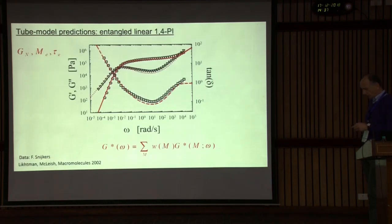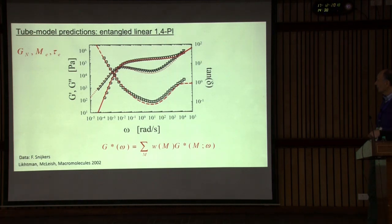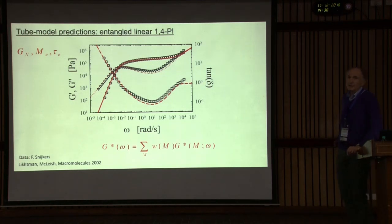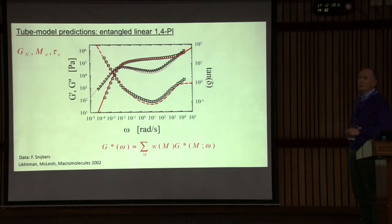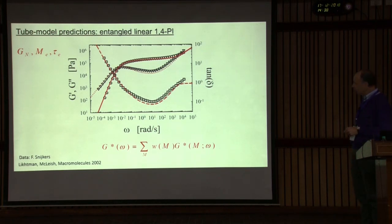One can use the tube model, which tells you that the modulus is basically a combination of contributions from different molecular weights at different frequencies. You need to know something about the dispersity of the chains and account for a number of details, mainly fluctuations of the ends and constrained release. In principle, without adjustable parameters — since the three parameters of interest, which are the plateau modulus, the entanglement weight, and the Rouse time of entanglement, are known from experiment — you get a good fit of the data.